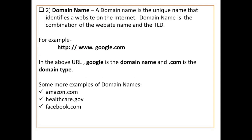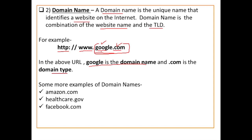Second is domain name. Domain name is the unique name that identifies a website — website का name होता है। Domain name is the combination of the website name and the TLD (top level domain). So in the URL http://www.google.com, your sub domain is www and your domain name is google.com — google is the name and .com is the domain type.